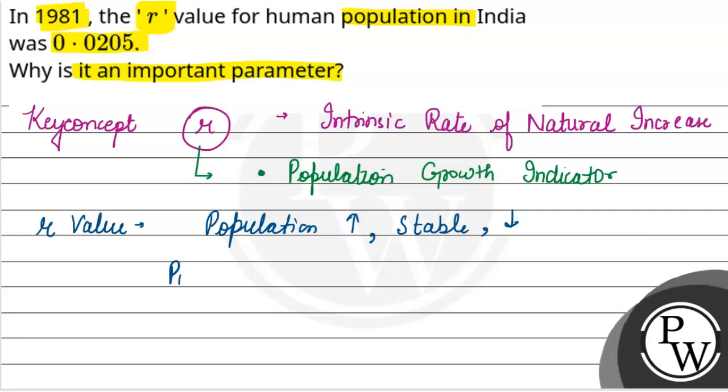If the value is positive, the population is growing. If it is negative, the population is decreasing. And if the value is zero, it will tell us that it is stable.